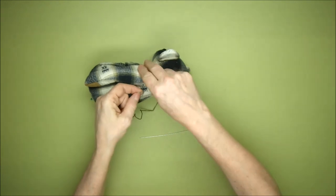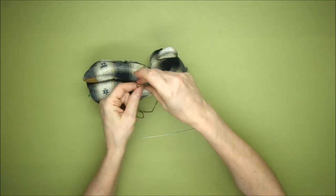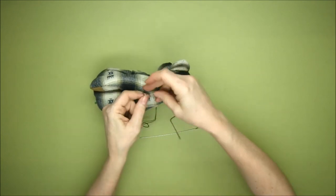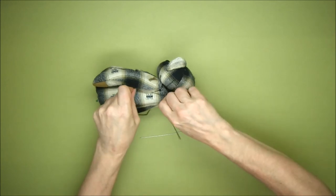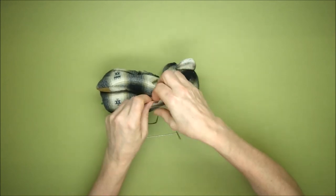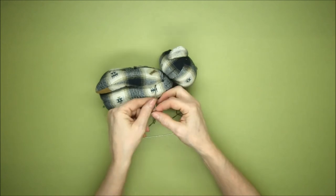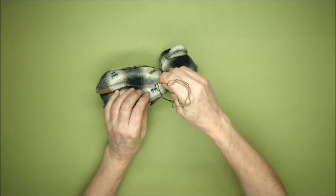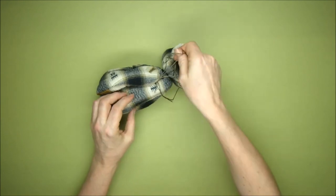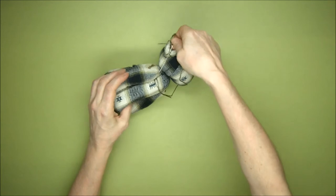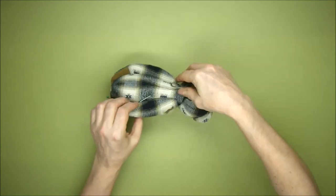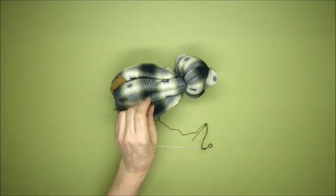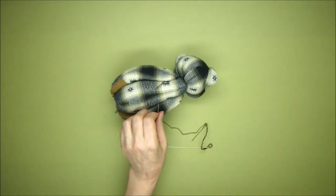I'm going to pull it nice and tight, make sure everything's securely in, and tie a double knot, an extra third knot for security. I'm left with one short and one long thread. I'm going to pop the needle back in at the same position that I've come out and I'm going to lose this thread in the body in the same way that we've done with the head and with the eyes. Pull it through, it doesn't really matter where you come out.